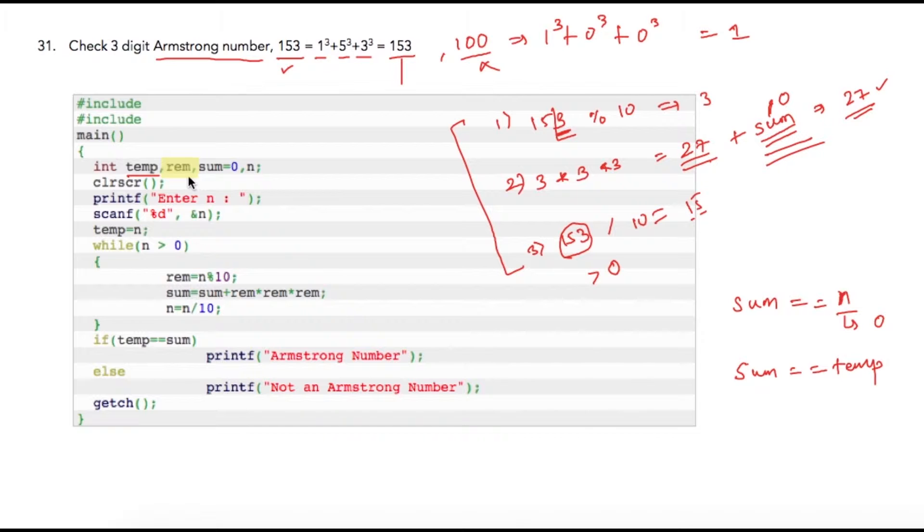Next variable is remainder which will be storing our remainders, and sum is a variable which will be storing addition of each cube. N is our number which we are using to accept value from user. Here I am asking user to enter a number, then we are storing n into temp.